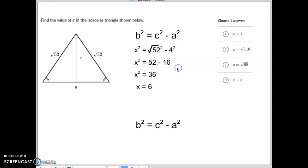4 squared is 16, and 52 minus 16 is 36. So, x squared equals 36. Take the square root of both sides, and we get x equals 6.